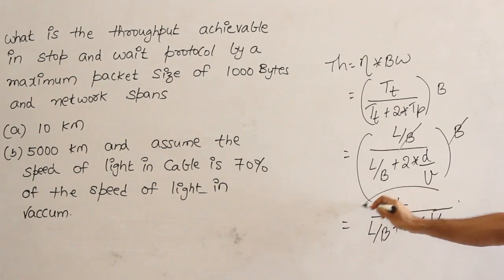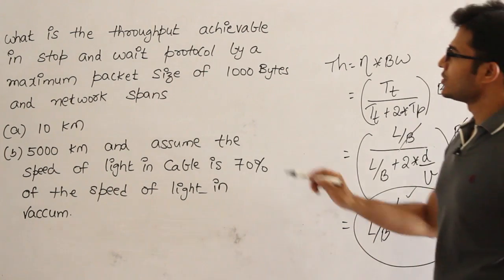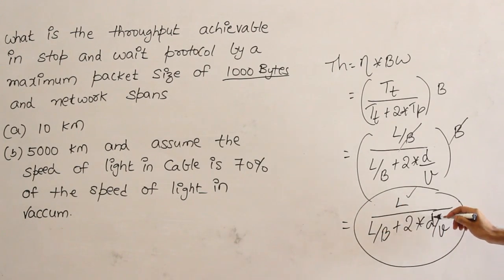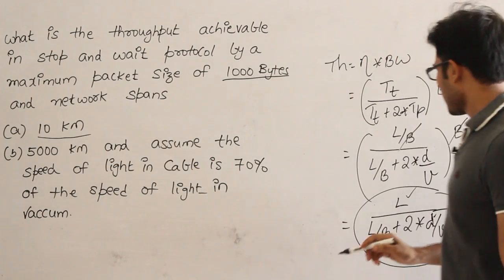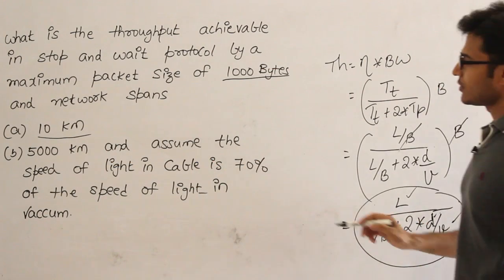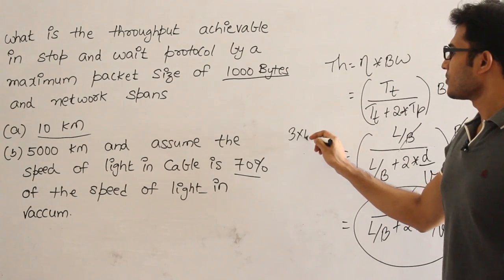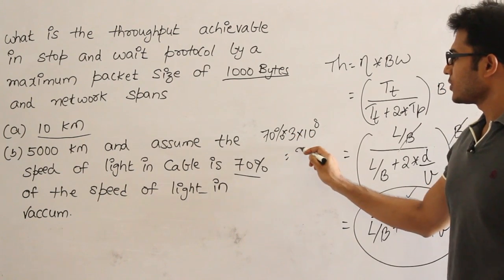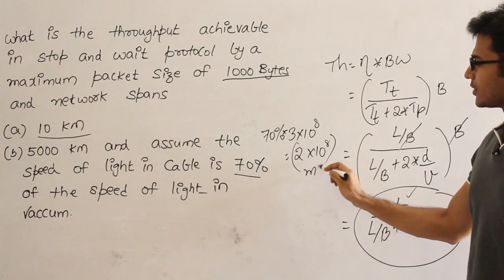In order to solve this question what are the factors that you need: one is length of the packet which is already given. Length is nothing but 1000 bytes and other is distance of the wire. Distance is nothing but 10 kilometers which is given and other is velocity. Velocity is also given as 70% of speed of light. So what is speed of light? 3 into 10 power 8. And what is 70% of this? 70% is nothing but 2.1. You can take it as 2 into 10 power 8 meters per second which is already given.